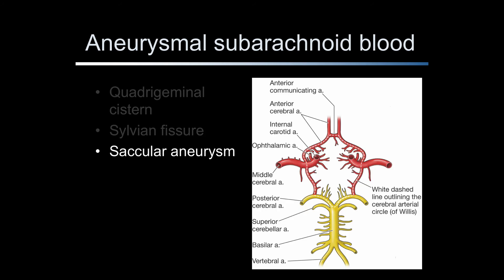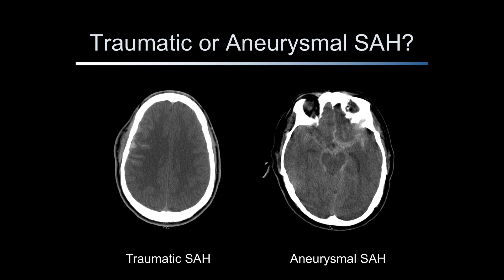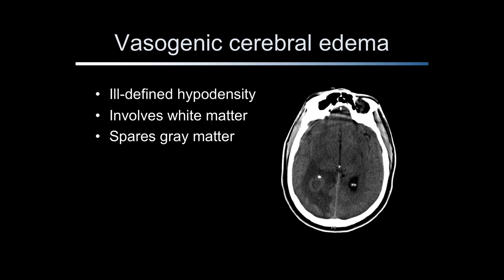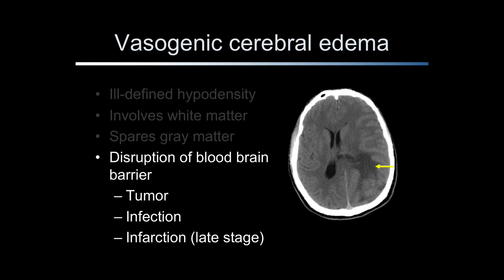It is important to distinguish between a traumatic and aneurysmal subarachnoid hemorrhage as the evaluation and management of the latter is much more extensive. Cerebral edema can be generalized or focal. There are two types of localized cerebral edema: cytotoxic and vasogenic. Cytotoxic edema occurs within minutes of the onset of ischemia and cellular functions are disrupted, resulting in cellular edema. Cytotoxic edema is difficult to see on CT scan. Vasogenic cerebral edema appears as an ill-defined hypodensity of the white matter and spares the gray matter. It is due to disruption of the blood-brain barrier and is seen surrounding tumors, infections, and in the late stages of cerebral infarction. Vasogenic edema in this patient is due to a large occipital tumor.